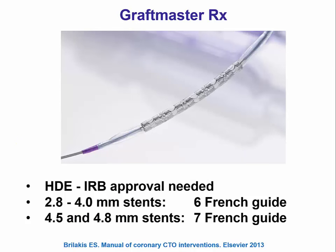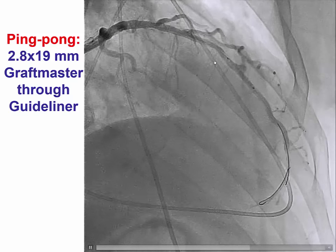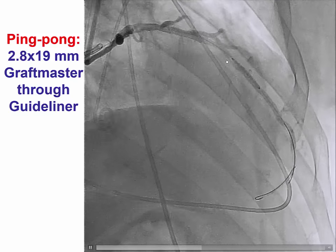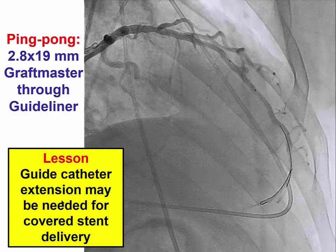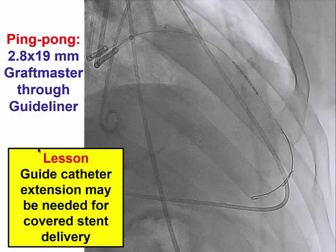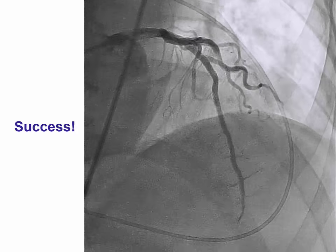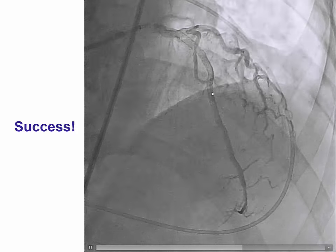There is only one covered stent available in the United States, the Graftmaster RX, which requires a 6 French guide for the smaller sizes (up to 4.0 mm) and a 7 French for 4.5 and 4.8 mm. A 2.8 mm Graftmaster can be delivered through a GuideLiner catheter, which helps navigate through the first stent. Graftmasters are excellent stents but very bulky and hard to deliver, so having a GuideLiner nearby can really facilitate delivery. In this case, using the GuideLiner and after good post-dilation—because these stents require high pressures to fully expand—we achieved successful sealing of the perforation with no more extravasation.